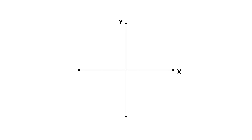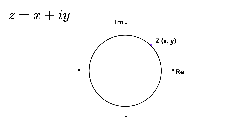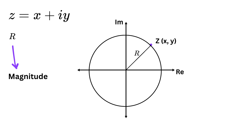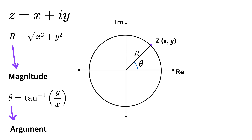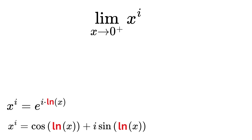Let us see why. Consider this x and y axis, where the x axis represents a real number line and the y axis represents an imaginary number line. Then any point z on this coordinate plane can be written as z equals x plus i y. If we draw a circle that passes through this point with its center at the origin, then the distance from the origin to the point is the magnitude r, which, using Pythagoras' theorem, equals the square root of x squared plus y squared. And the angle it makes with the positive x axis is called theta, which equals tan inverse of y over x. This allows us to write z in polar form as r times e raised to i theta.